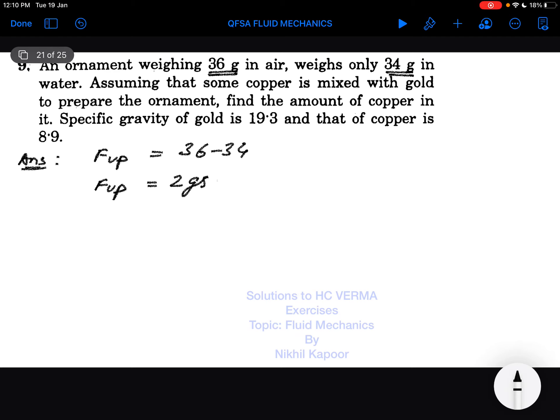We need to find the amount of copper in it. Let x grams be the amount of copper, so obviously 36 minus x grams would be the amount of gold.